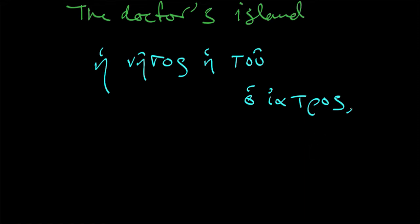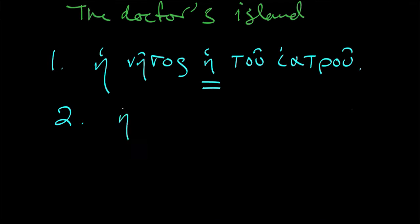But then the genitive of iatros, it's a standard second declension noun, is ou. I should have mentioned that the accent's on the Ultima. So the island, the one of the doctor. Maybe it's Dr. Phil. I don't know who has enough money to really own a private island as a doctor, but maybe a very successful neurosurgeon. The island, the one of the doctor. This is an acceptable way that happens a decent amount. But as I mentioned in class the other day, this is slightly inefficient because we're doubling up this article. We're saying the island, the one of the doctor.